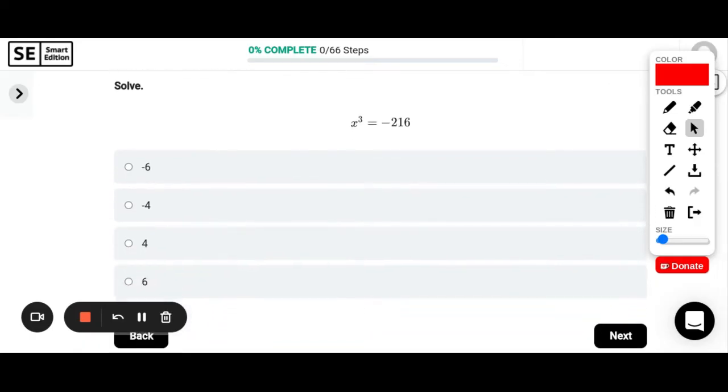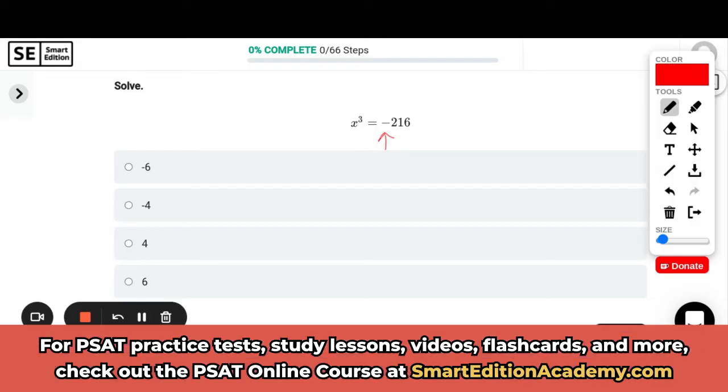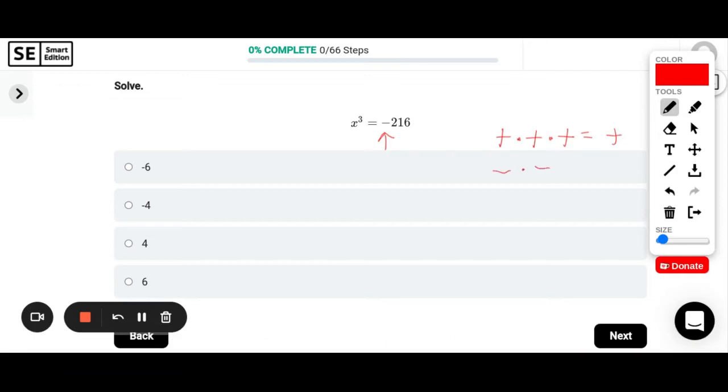Okay, solve this exponential: x to the third equals negative 216. So something that can help here is knowing how this negative, how could we get a negative if we have x to the third power. So this means something times something times something. So if you think about a positive, if I had a positive number, a positive times a positive times a positive, well that's always going to be positive. That will equal a positive. But if I have a negative times a negative times a negative, negative times a negative is a positive, but then times one more negative would give me a negative. So in order for my answer to be negative when I'm cubing it, multiplying it three times, my answer needs to be negative. So I know it can't be these two.